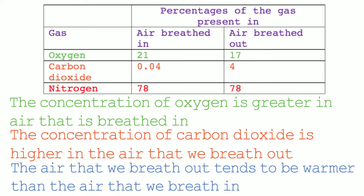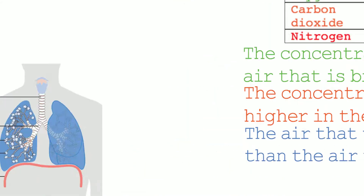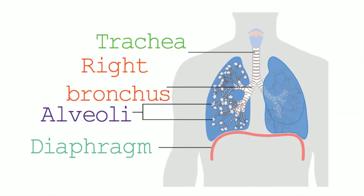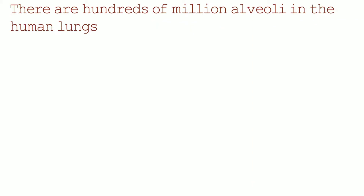So let's have a look at the alveoli in more detail. The alveoli are in the lungs and they are at the end of the bronchioles. Air travels down the trachea, down one of the bronchi — either the left or right bronchi — through the bronchioles and into the alveoli. There are hundreds of millions of alveoli in the human lungs.